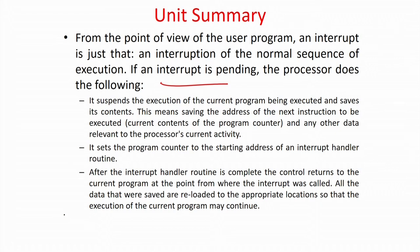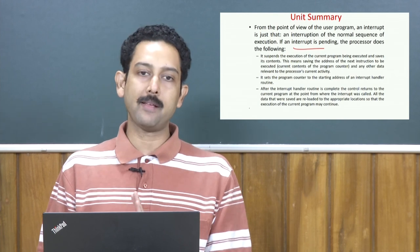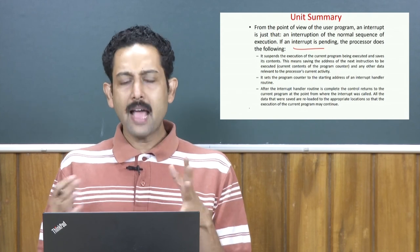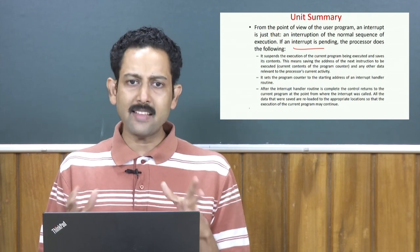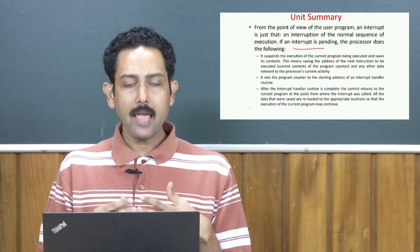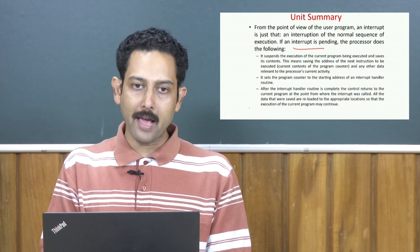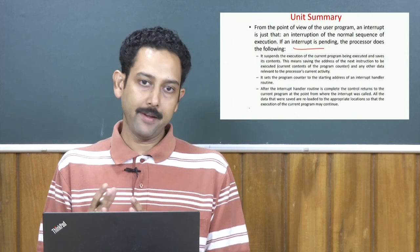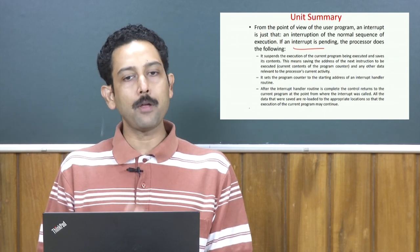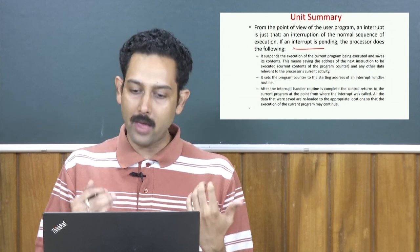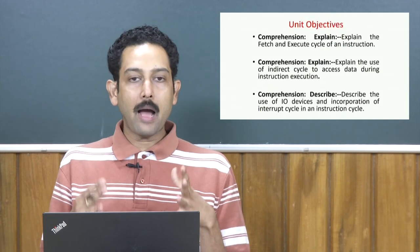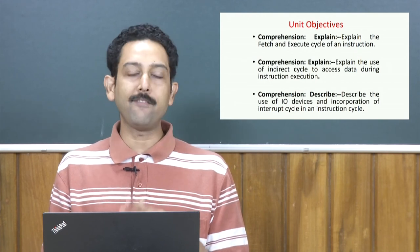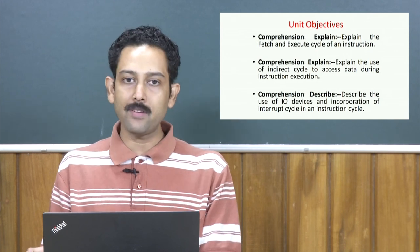In a nutshell: after every instruction is executed, you check whether an interrupt has come. If so, save everything — program counter, instruction register values, intermediate register values — in a stack. Service the interrupt, then come back from where you left, recollect everything, and go ahead. Interrupt means not only servicing the interrupt, but also storing and restoring everything so you can start again from where you left.